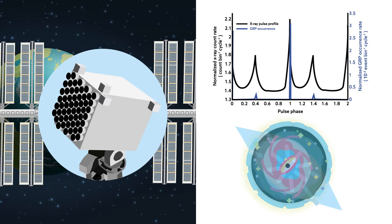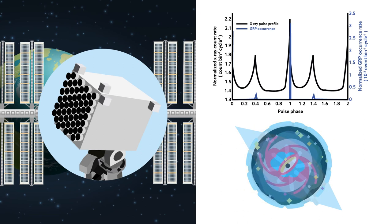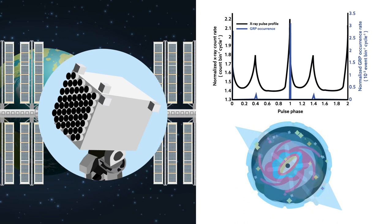NICER's high precision in time enabled the researchers to, for the first time, measure an X-ray enhancement from a giant burst. These pulses occur within a millionth of a second. NICER is equipped to record X-rays within a tenth of that time frame.